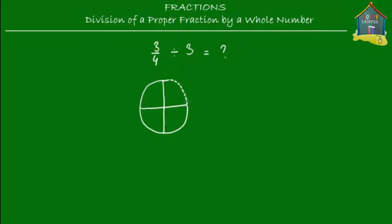So what we don't have is this one piece over here. This is what we don't have. And what we do have is we have these three pieces — this one, this one, and this one. So these three pieces is three fourths of the pizza.